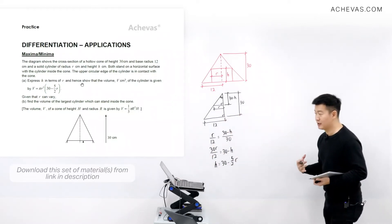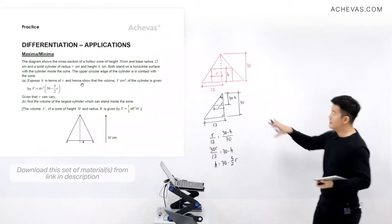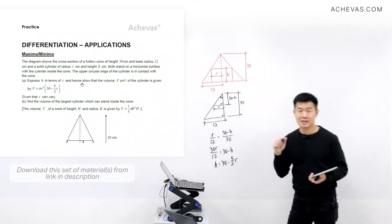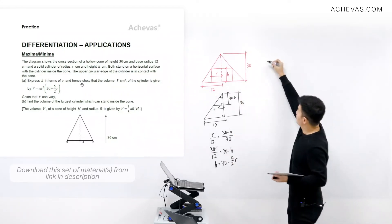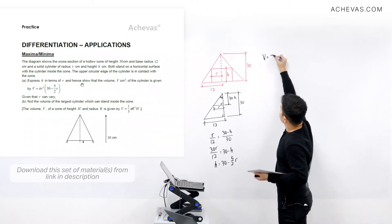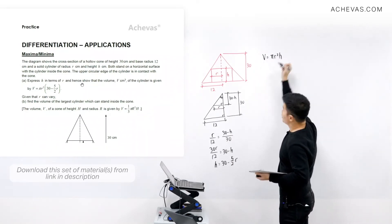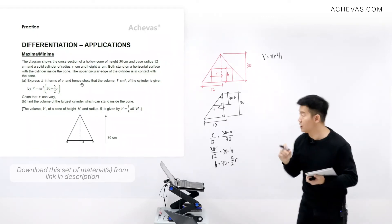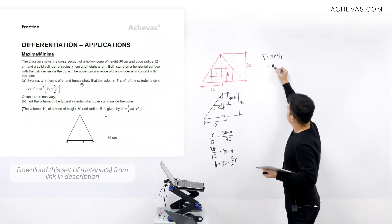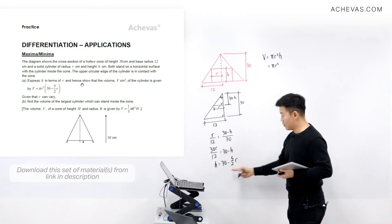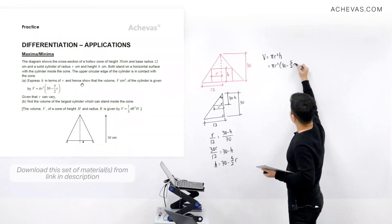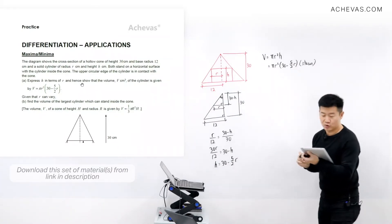The volume of a cylinder is V = πr²h. Since the question wants V in terms of r only, we substitute h = 30 − (5/2)r, giving V = πr²(30 − (5/2)r), which is the expression the question asks us to show.